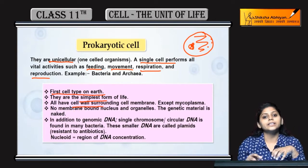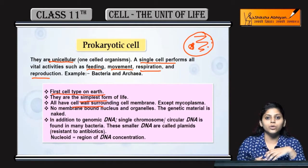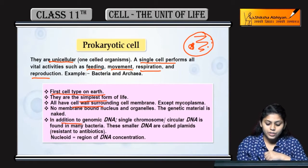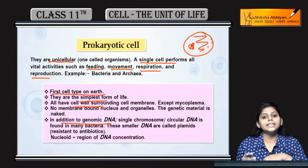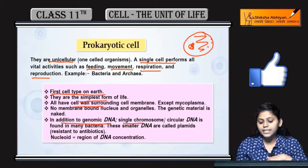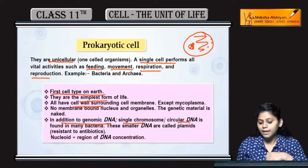Prokaryotic cells के cell wall होती है जो cell को surround करती है और environment से protect करती है. Genomic DNA present होता है और उसके साथ-साथ single chromosome present होता है जो circular DNA होता है. इसके अलावा plasmids भी present होते हैं.